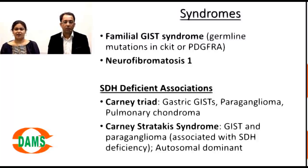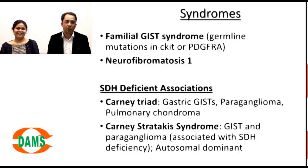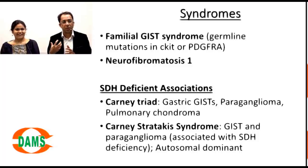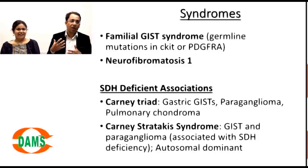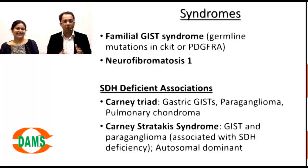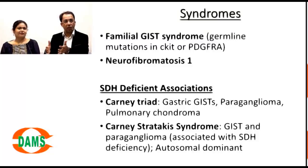Carney-Stratakis syndrome involves both GIST and paragangliomas and is an autosomal dominant condition — it is critical in exams to distinguish between Carney's triad and Carney-Stratakis syndrome. As an examiner, one might present a chest X-ray with popcorn calcification (pulmonary chondroma) alongside an abdominal CT, expecting the student to integrate the findings and arrive at Carney's triad — building an integrated diagnostic picture.